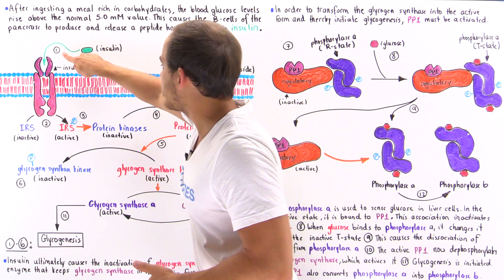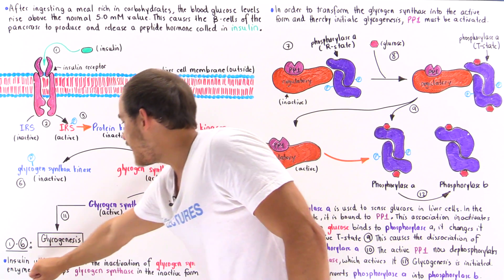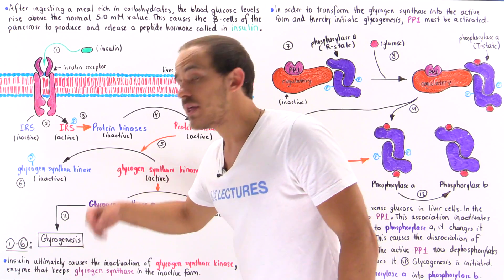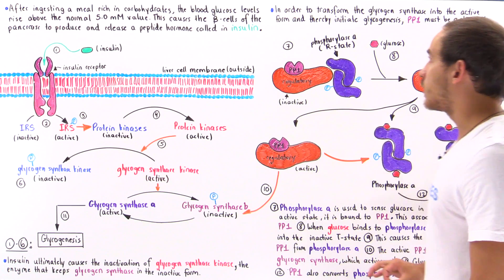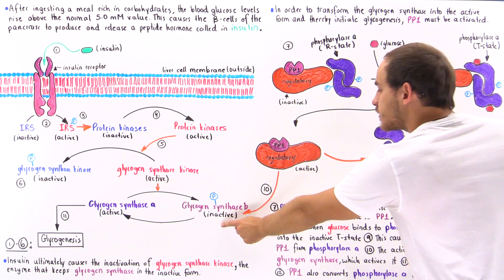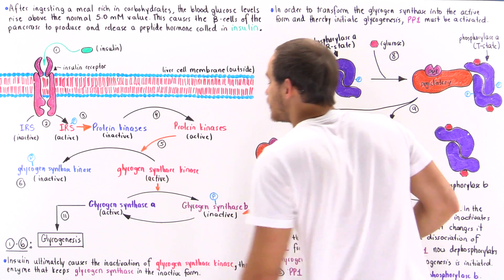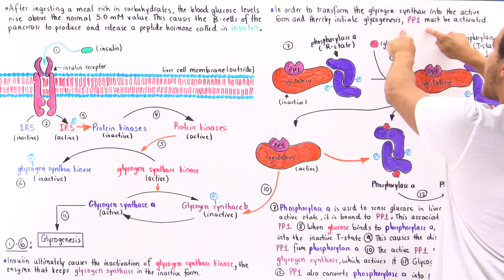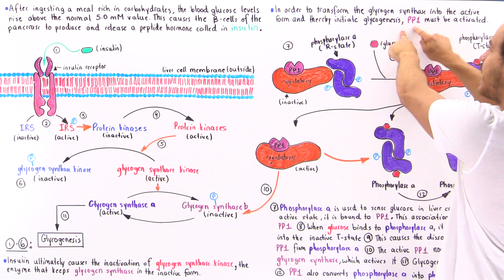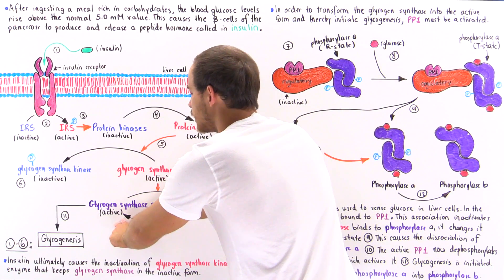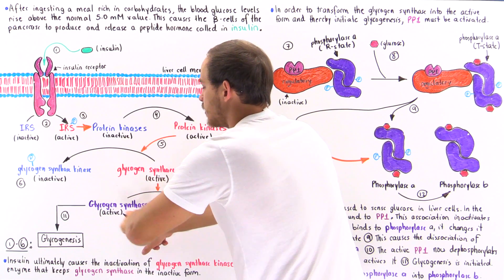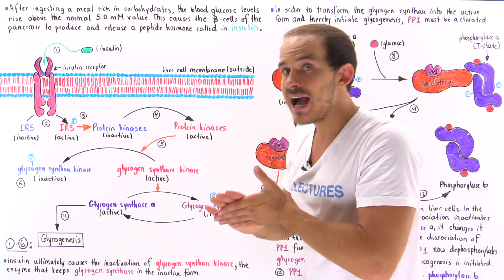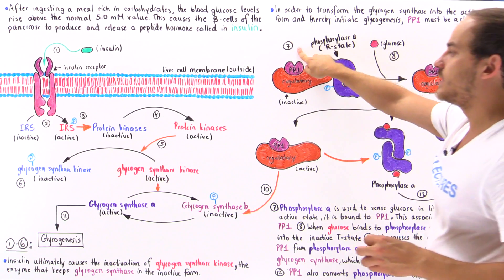So we see that from steps 1 through 6, insulin ultimately causes the inactivation of glycogen synthase kinase — the enzyme that keeps glycogen synthase in the inactive form. Now, in order to actually transform glycogen synthase B into the active form, glycogen synthase A, our liver cells must initiate glycogenesis. To do this, they have to activate PP1, because it is protein phosphatase 1 that stimulates this conversion and allows glycogen synthase A to induce the process of glycogenesis. So in this diagram, we're going to describe how PP1 is actually activated. Let's move on to diagram 7.